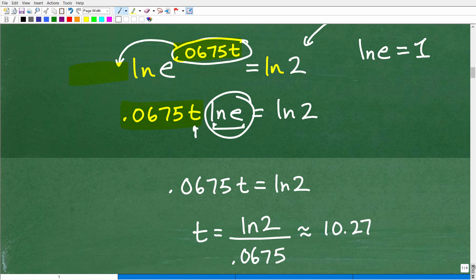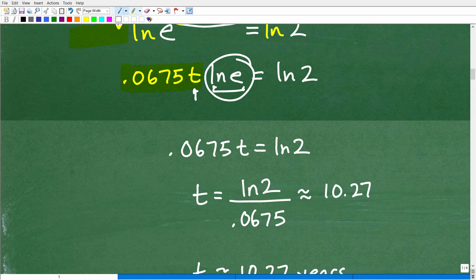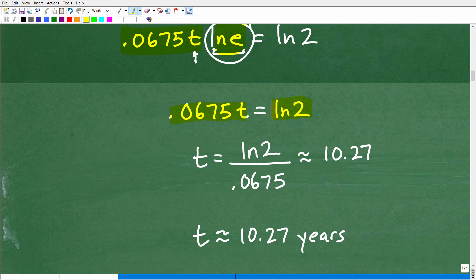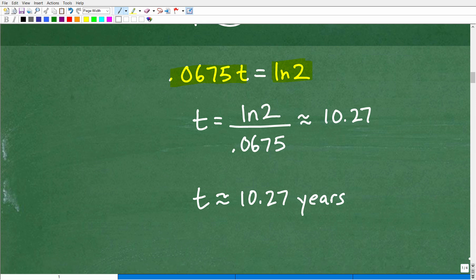So that just really leaves me with 1 times this. So I have 0.0675T, okay, because this is just 1. So 1 times that is just that, is equal to L-N, 2. And don't, when you're doing this, don't start turning these into decimals yet. Okay, wait until you get to the very end of the problem, and then put all this stuff into your calculator.